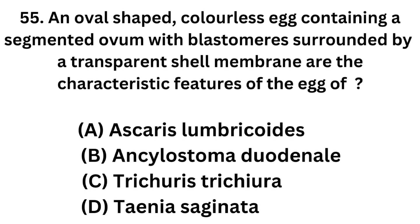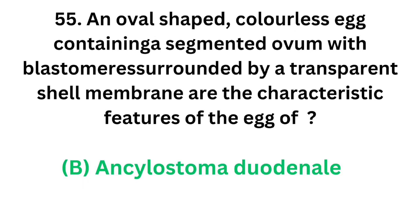Question number 55. An oval shaped, colourless egg containing a segmented ovum with blastomeres surrounded by a transparent shell membrane are the characteristic features of the egg of: Option A: Ascaris lumbricoides. Option B: Ancylostoma duodenale. Option C: Trichuris trichiura. Option D: Taenia saginata. The correct answer is Option B, Ancylostoma duodenale — the hookworm — which is oval shaped, colourless, containing a segmented ovum with blastomeres surrounded by a transparent shell membrane.